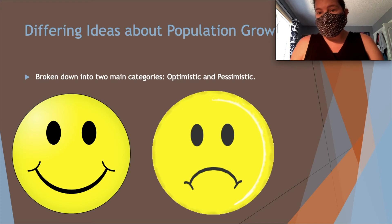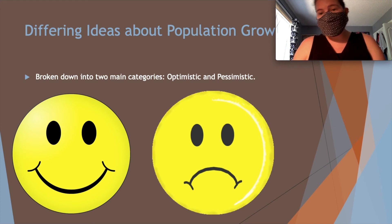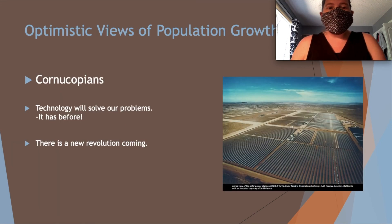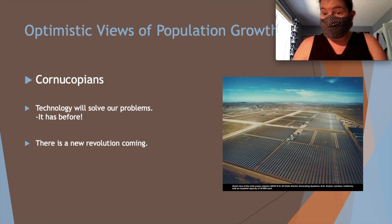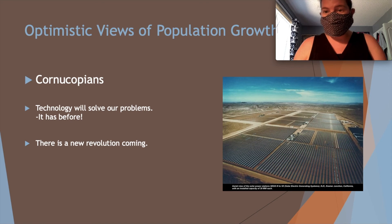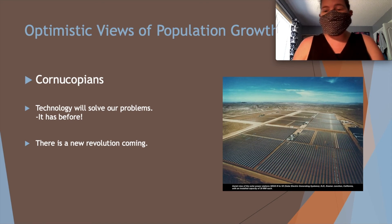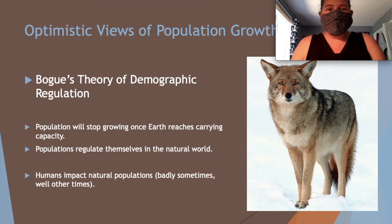There are two categories for ideas about population growth: the optimistic and the pessimistic. Starting with the optimistic: the first is the Copernicans. The idea here is that technology will solve all of our problems — a new revolution is coming and whatever it is, it's going to solve all the issues from overpopulation and we're going to be fine.